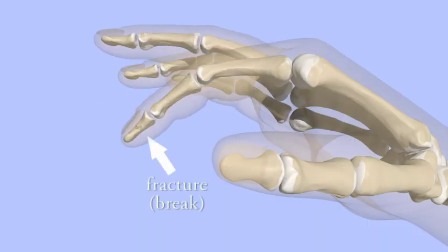Fractures of the finger bones are very common. Often, these fractures are well aligned and stable. They can be treated with splinting and buddy taping.